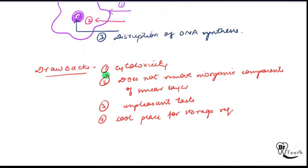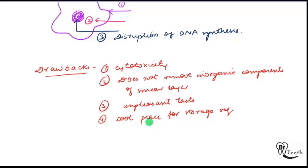Sodium hypochlorite has certain drawbacks. First, it has a cytotoxicity problem, which is why we use 2.5% concentration or lesser concentration, even though 5.2% was more effective. It does not remove the inorganic components. It has an unpleasant taste. And it requires a cool place for storage.